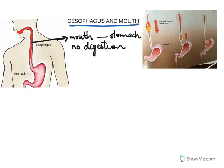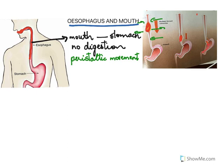There is a special movement called peristaltic movement that begins in the esophagus. There is a small picture here of the peristaltic movement. The muscles of the esophagus contract and relax alternately — this rhythmic contraction and relaxation pushes the food down the esophagus into the stomach.